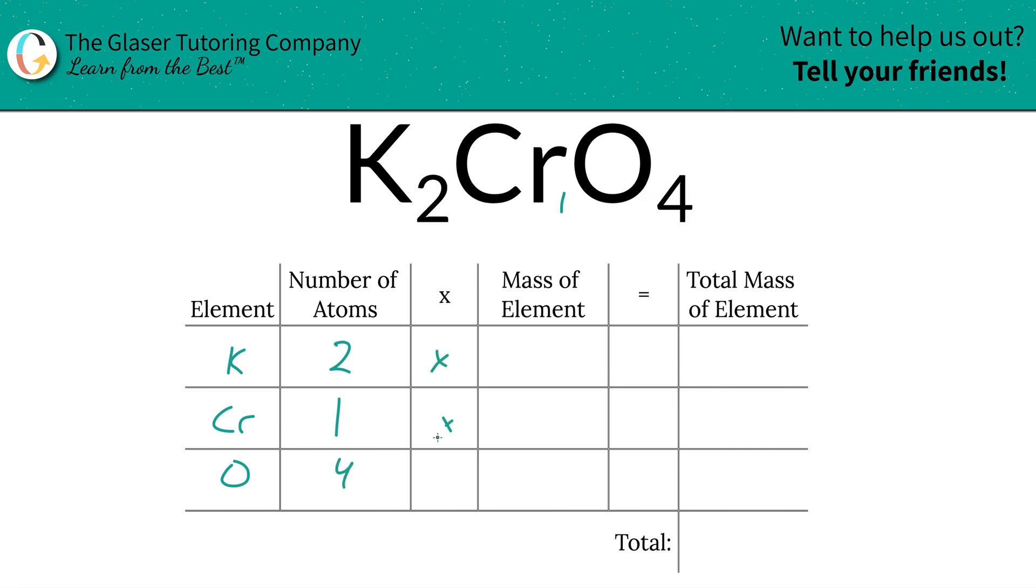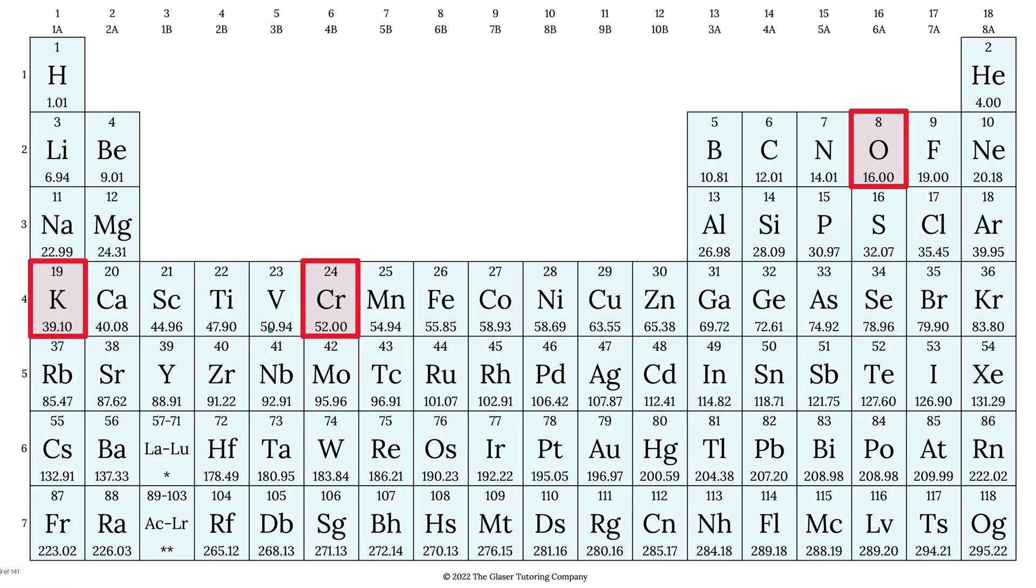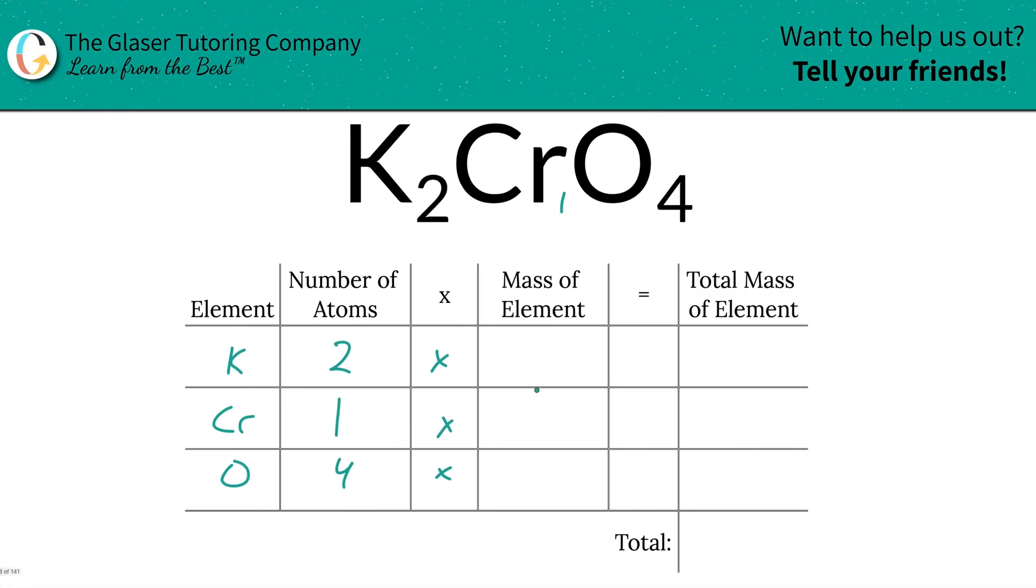So we simply take those numbers and we're going to multiply it by the mass of each particular element. The masses are found here on the periodic table. So potassium is 39.10, chromium is 52, and oxygen is 16. So let's write them in: 39.10, 52, and then 16.